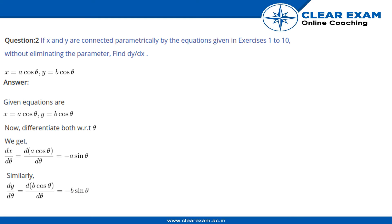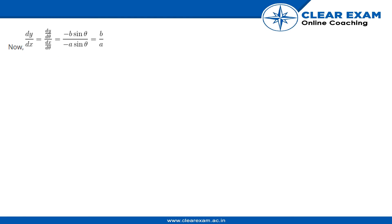Hence dy/dx equals dy/dθ divided by dx/dθ, which equals minus b·sin θ upon minus a·sin θ, and the sine θ terms cancel. The final answer is dy/dx equals b/a.